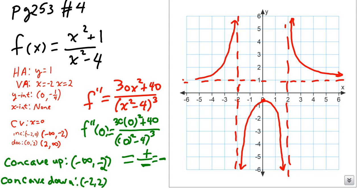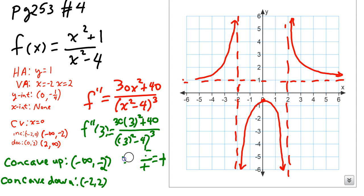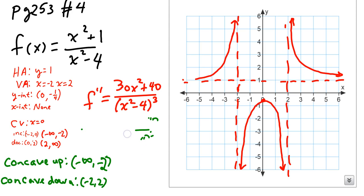Lastly, I pick a number to the right of 2 — say 3 — and plug it into the second derivative. I get a positive numerator and a positive denominator, so the overall second derivative is positive when x equals 3. Because that's positive, I'm concave up on the interval from 2 to infinity. So I can fill in that I'm concave up from 2 to infinity.